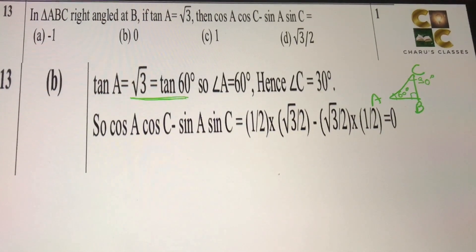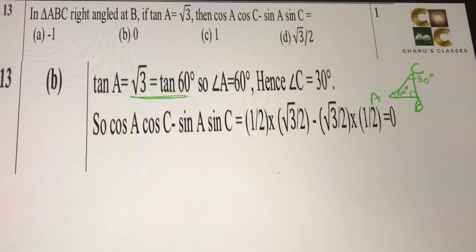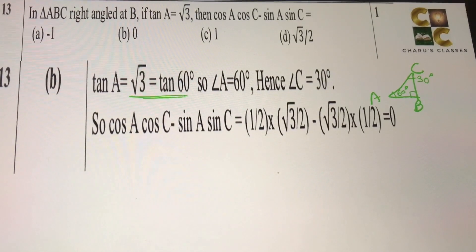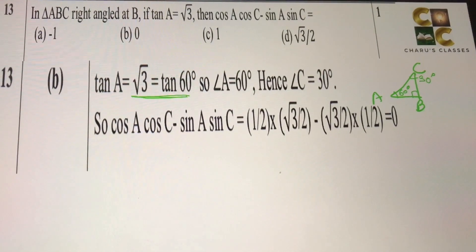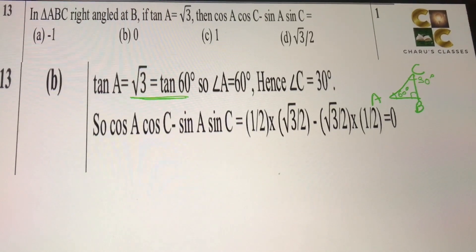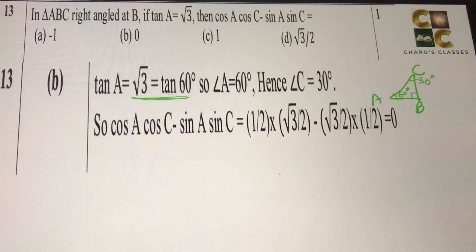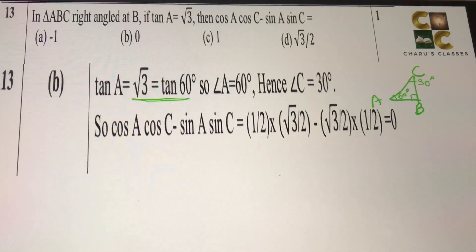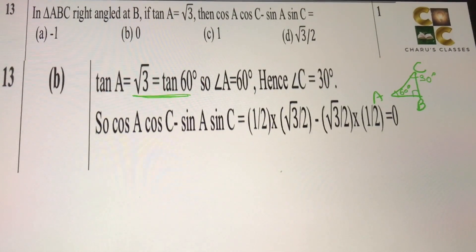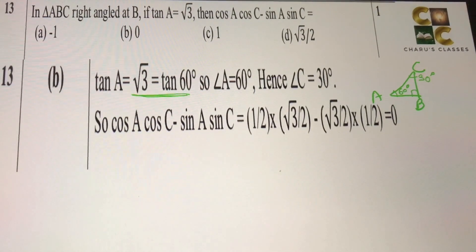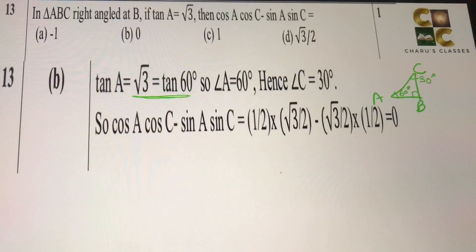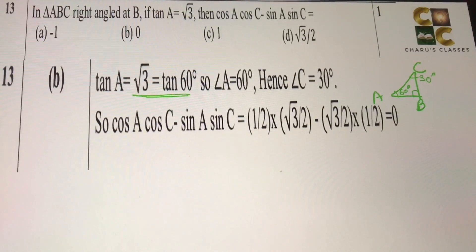Now, we just have to put the values. Cos A, that means cos 60, that is half, into cos C. Cos C means cos 30 degree, that is root 3 by 2, minus sin A, sin 60 degree, that is root 3 by 2, into sin C, that is half, sin 30 degree is half. So when you solve it, the answer is coming as 0.